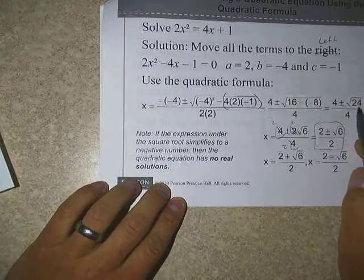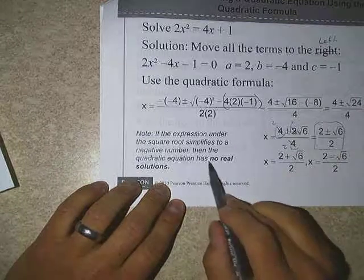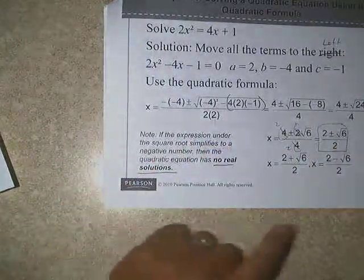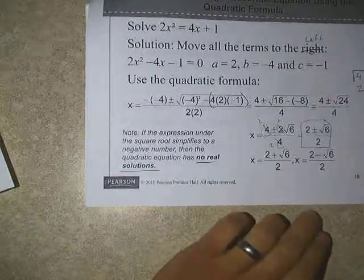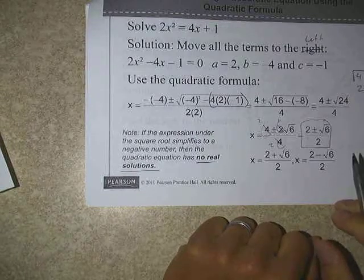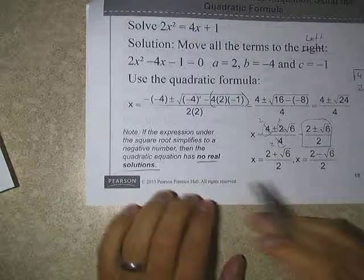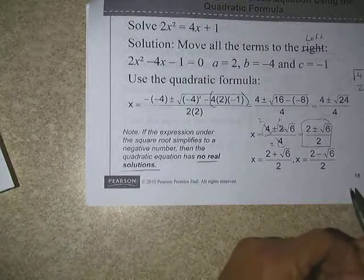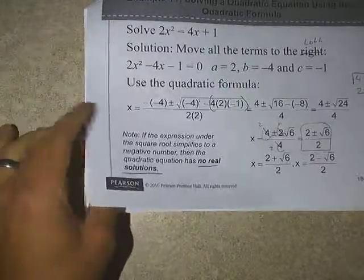One thing to note over here on the left, too, is this could happen also. If the expression under the square root simplifies to a negative number, say for argument's sake we'd gotten negative 24 here, then the quadratic equation has no real solutions. And we would just stop. Now, since we already passed advanced algebra, we know that we can do something with negatives under the radical. In this particular class, though, we're just going to leave it as no real solutions. We're not going to get into imaginary numbers in this class.